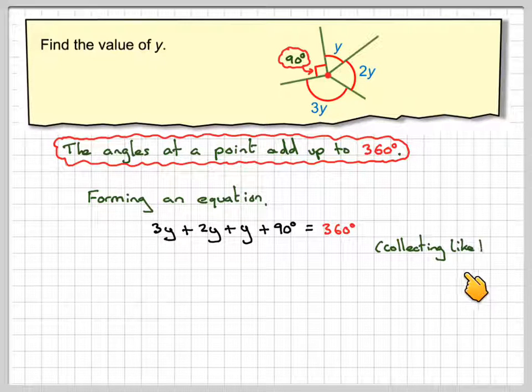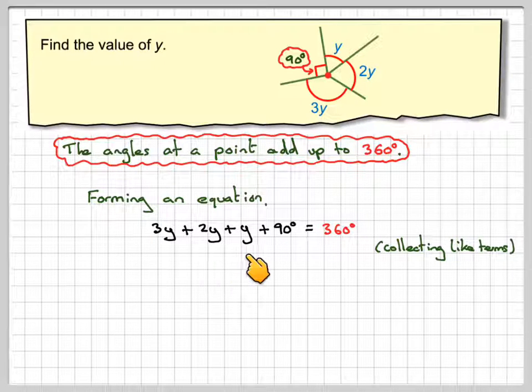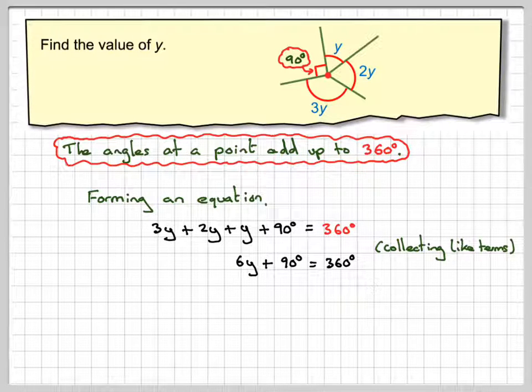Collecting like terms, so 3y plus 2y plus y makes 6y, still plus 90, is equal to 360.